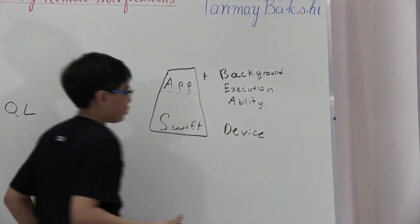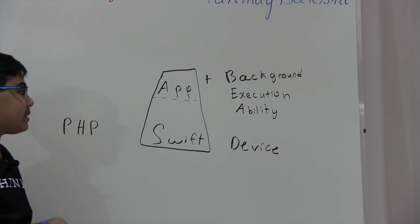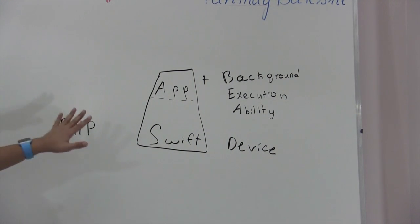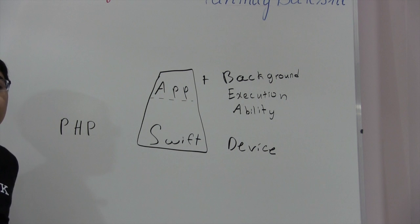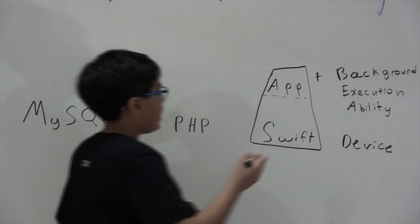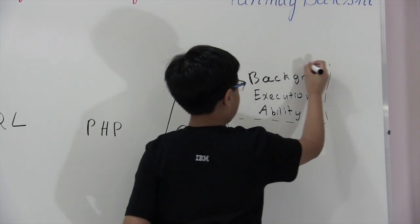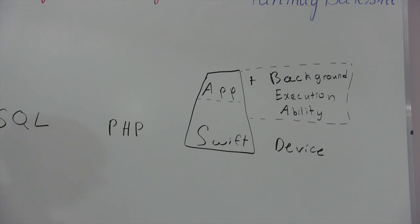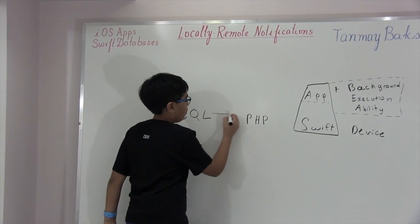We're going to add something I like to call the background execution ability. If you go into the capabilities tab in Xcode info, you will find something called background execution. Basically, this will allow the app to run in the background with a little daemon, and it's just going to keep checking if we have to display a notification. This is an extension to the app added by Xcode to your app bundle ID specifically.